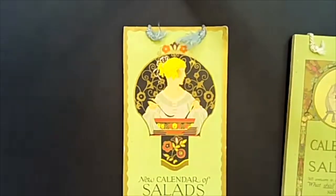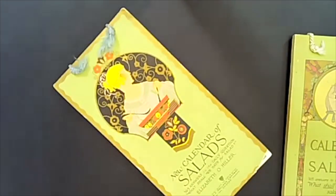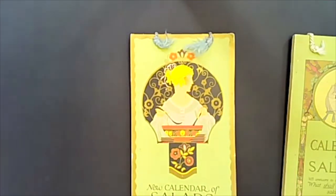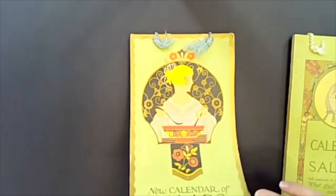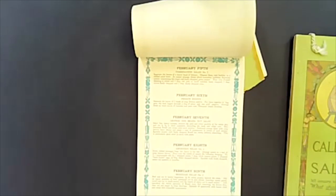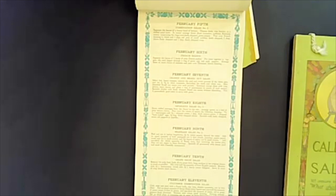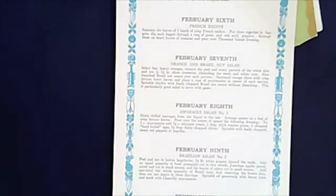This first cookbook is 'A New Calendar of Salads.' It was published in 1915 by the Bowen Press. It is actually a calendar with different salad instructions for every day of the week, with the idea that you could have a different salad based on things you were growing out of your garden.